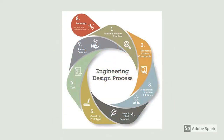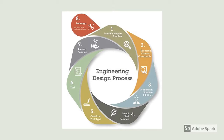The engineering design process is a series of steps that engineers follow to come up with a solution to a problem. Many times a solution involves designing a product, like a machine or computer code, that meets certain criteria or accomplishes a certain task. If your project involves making observations and doing experiments, follow the scientific method. But if your project involves designing, building, and testing something, follow the engineering design process. The steps are: define the problem, do background research, specify requirements, brainstorm solutions, choose the best solution, do developmental work, build a prototype, then test and redesign.